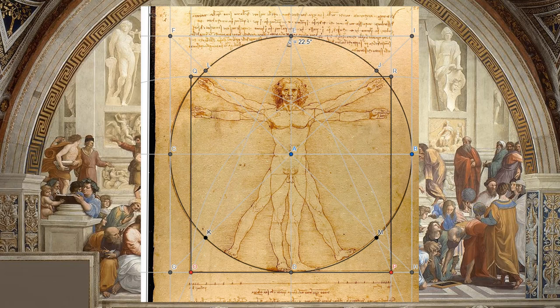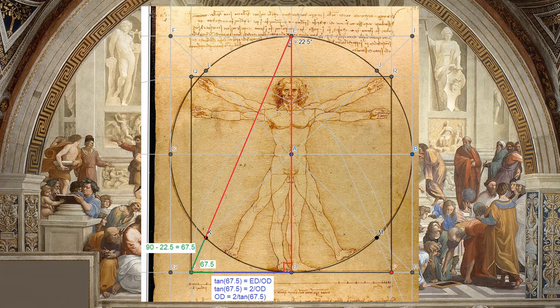Assuming the radius of the circle is one, we can use trigonometry to find that the length from points O to D is two divided by the tangent of 67.5 degrees, which equals about 0.828. Since O to D is half the side length of the square, the square will have a side length of four divided by the tangent of 67.5, or 1.657. This means the square and the circle have a side length to diameter ratio of about this value.